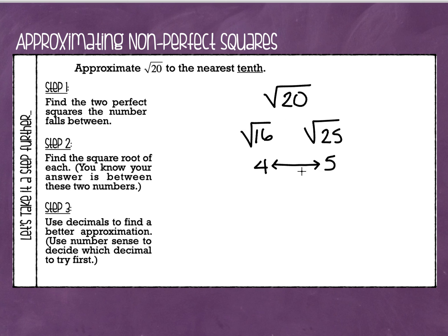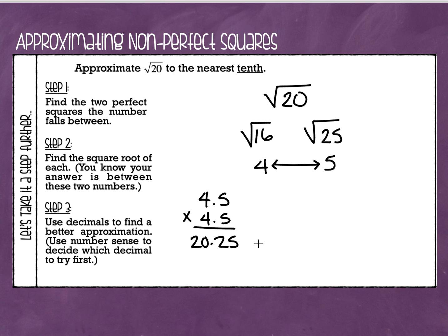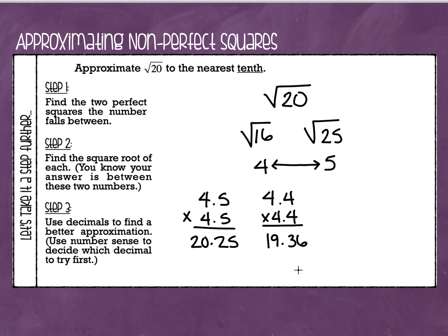Once I know it's going to be 4 point something, I have to figure out what that point something is. A good way to start is right in the middle — the number in the middle of 4 and 5 is 4.5. So let's check that: 4.5 times 4.5 gives me 20.25, which is really close to 20, so 4.5 is a really good approximation. But we always want to check to make sure we have the closest number. Since 20.25 is a little bit high, let's try 4.4 times 4.4, which gives me 19.36 — also really close to 20, and 20 comes right in between.